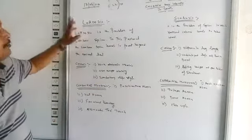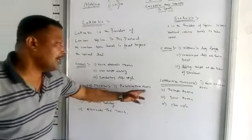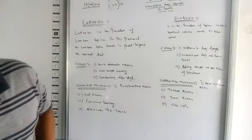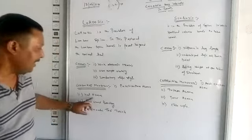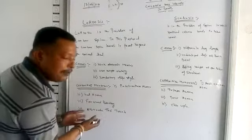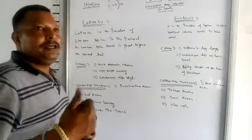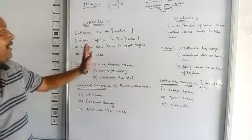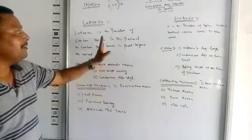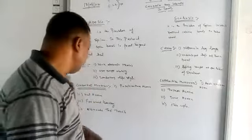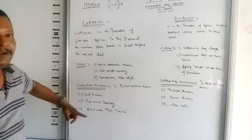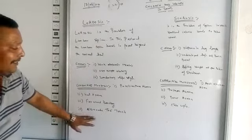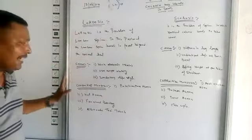Now we come to the corrective measures of this particular postural deformity. Number one is Paschimottanasana — all of you know about the body posture of Paschimottanasana. Next is forward bending, because here the lumbar spine bends forward and the stomach goes beyond the shoulder line, so forward bending exercises are important corrective measures for Lordosis postural deformity. The last and most important corrective measure is alternate toe touch.